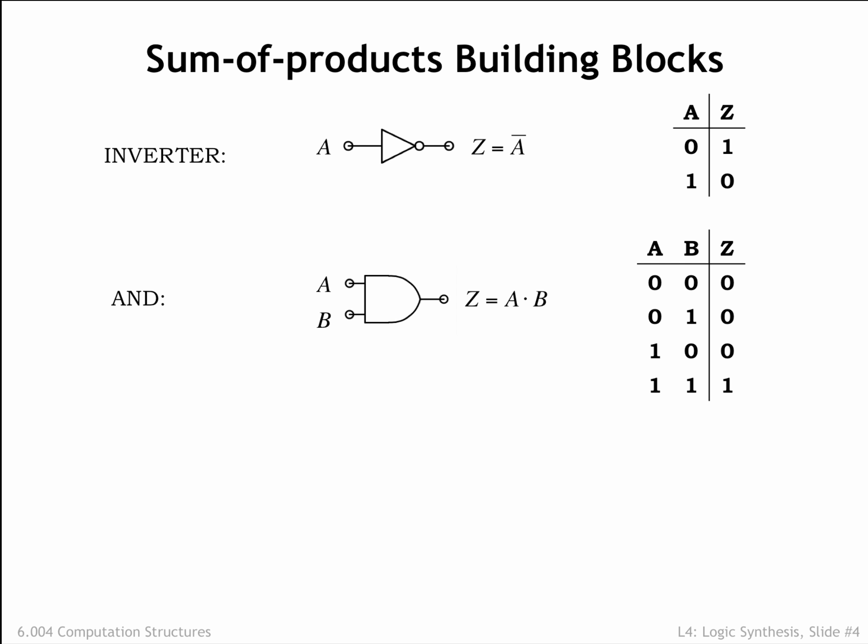The AND gate outputs 1 if and only if the A input is 1 AND the B input is 1, hence the name AND. The library will usually include AND gates with 3 inputs, 4 inputs, etc., which produce a 1 output if and only if all of their inputs are 1.